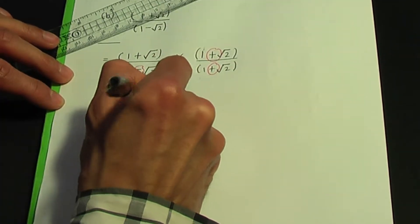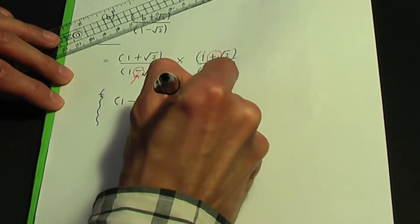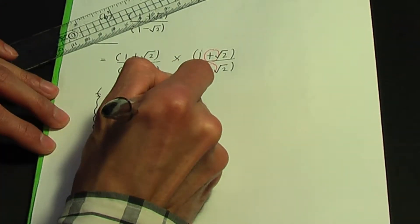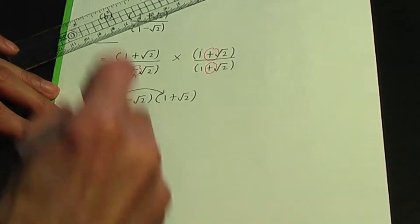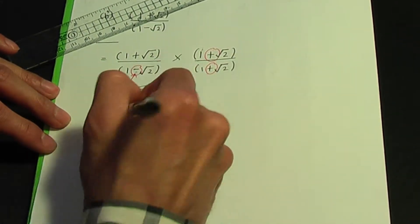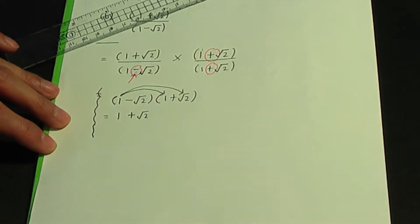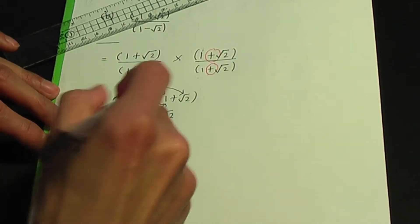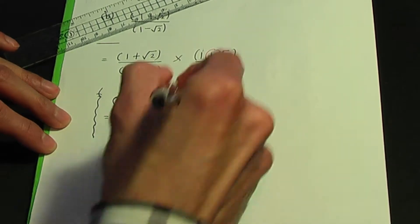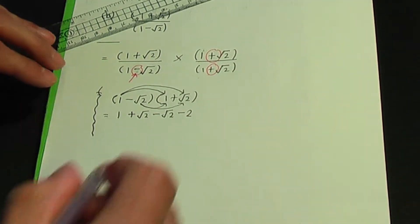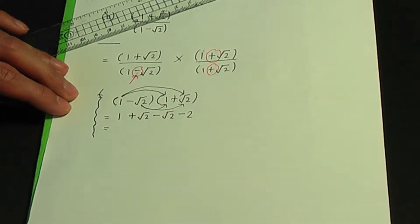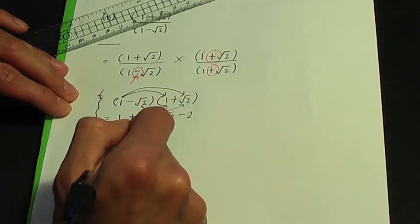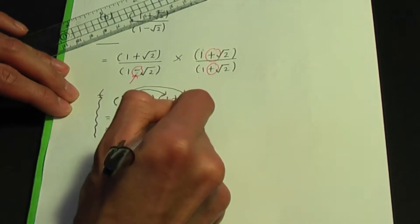Multiplying one minus root two by one plus root two: one times one is one, one times root two is root two, minus root two times one is minus root two, and minus root two times root two is minus two. Simplifying by adding like terms: one minus two is minus one, and plus root two and minus root two cancel.